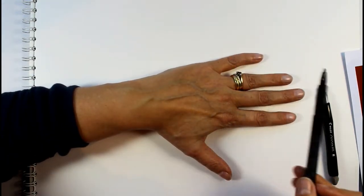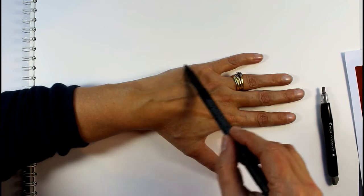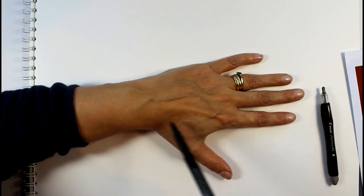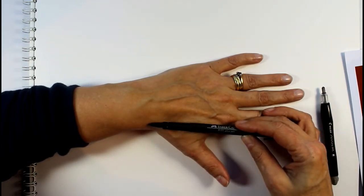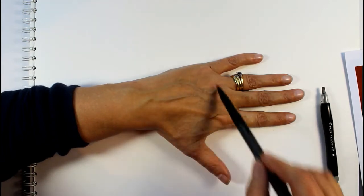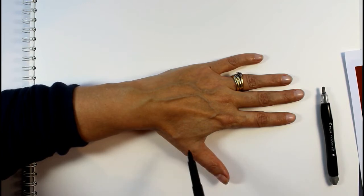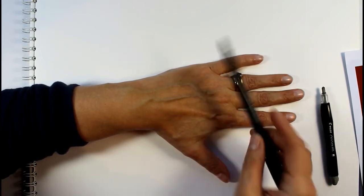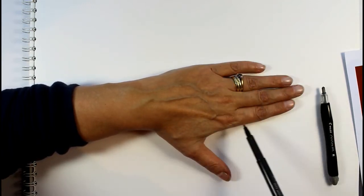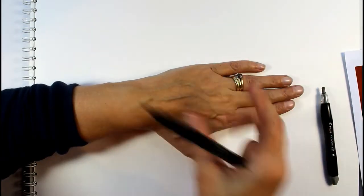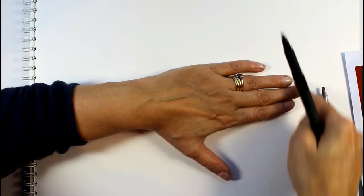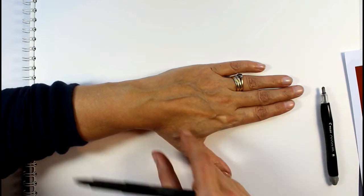Break the hand down into parts. You've got this very wide part here - ignore the thumb for now, we'll do that as a separate part. Go with this one part here, this shape, which is very much a triangular shape, and then the thumb off there. If you think of these fingers as a block also, you've got two blocks here and here, you've got this triangular shape, and then you've got the thumb which we'll think of separately.